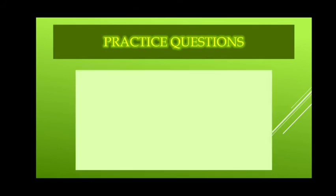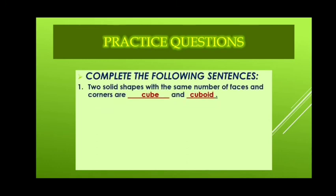It's time to do some practice questions. Complete the following sentences. Question number one. The two solid shapes having same number of faces and corners are cube and cuboid. Cube and cuboid both have six faces and eight corners.